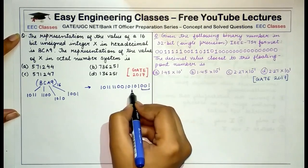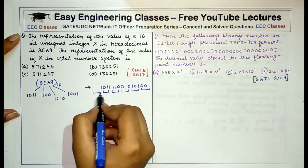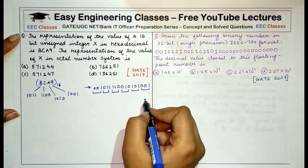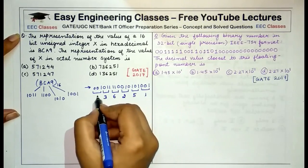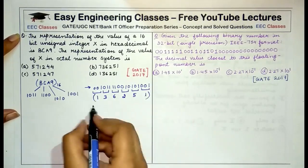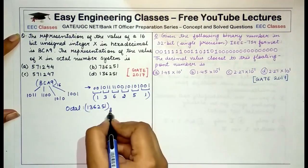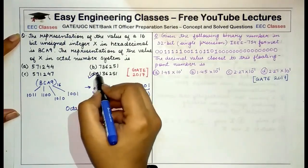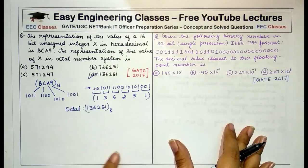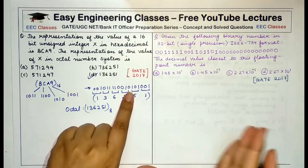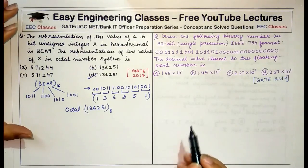Now if we group it in groups of three binary digits, writing the numbers corresponding to these groups would give me the value of 136251. So the octal representation would be 136251 base 8. This is a very easy question. The answer is D here. In this we just converted hexadecimal to binary and then for converting from binary to octal we grouped the digits from right to left in groups of three digits.